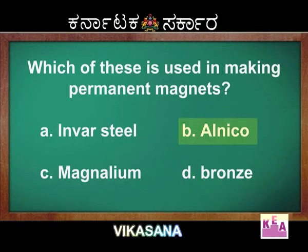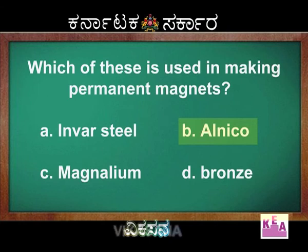Which of these is used in making permanent magnets? The right option is Option B — Alnico.